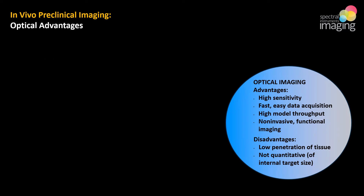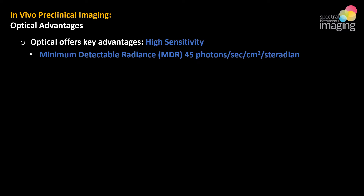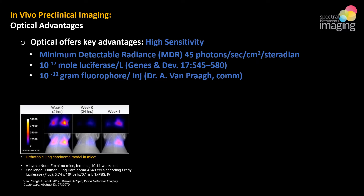Advantages include incredible sensitivity, fast data capture, high model throughput, and non-invasiveness. Disadvantages include low tissue penetration and difficulty measuring internal target size. The first advantage is sensitivity: robust system designs detect light emissions as low as 45 photons per second per centimeter squared per steradian, and can detect tiny amounts of luciferase enzyme and fluorophore units. The sensitivity differences between modalities can be considerable. Optical works at the molecular level, so changes in disease states can be detected much sooner than with MRI or micro-CT, which work at the cellular level.